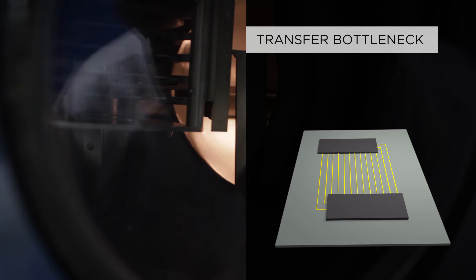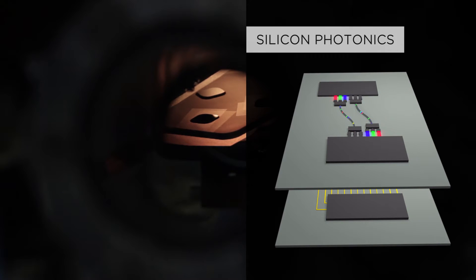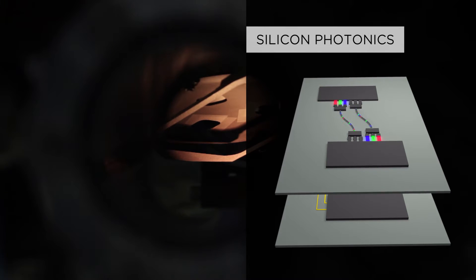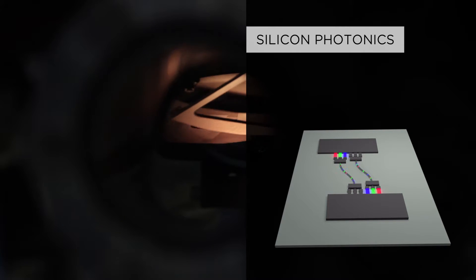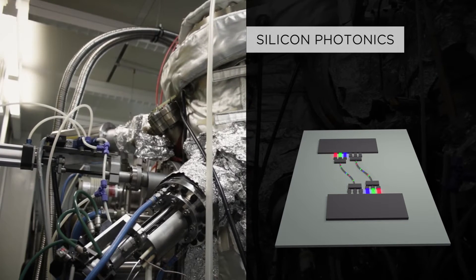However, the ohmic resistance of the latter has become a severe bottleneck for electronic data transfer. Silicon photonics is considered a possible solution for this problem. This highly active research field aims at replacing electronic signals for data transfer between chips and within a chip by optical signals. The main advantages are reduced energy dissipation and increased speed.